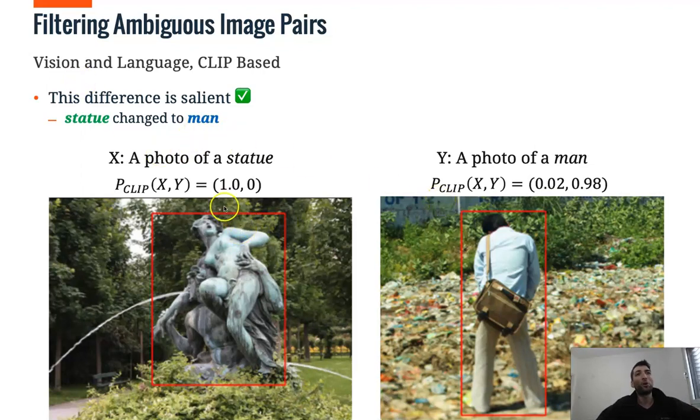And CLIP is 100% sure that this photo is a photo of a statue and not a man and that this photo is 98% to be a photo of a man and only 2% to be a photo of a statue.